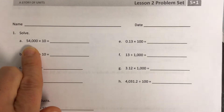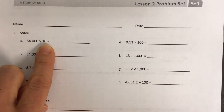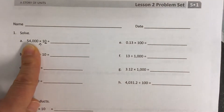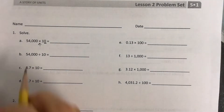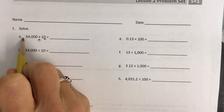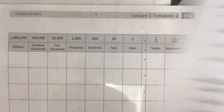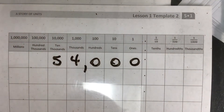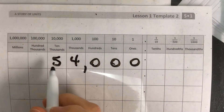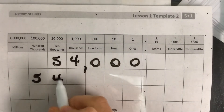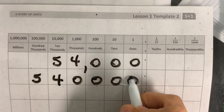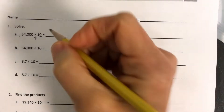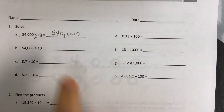The first example says 54,000 times 10. That means you take this starting number and it gets one place bigger because you're multiplying by 10. The 5 moves up one place on the place value chart — to the 100,000s place — and then the other digits follow along. Notice there's a blank spot, so I fill in a 0. The number is 540,000.